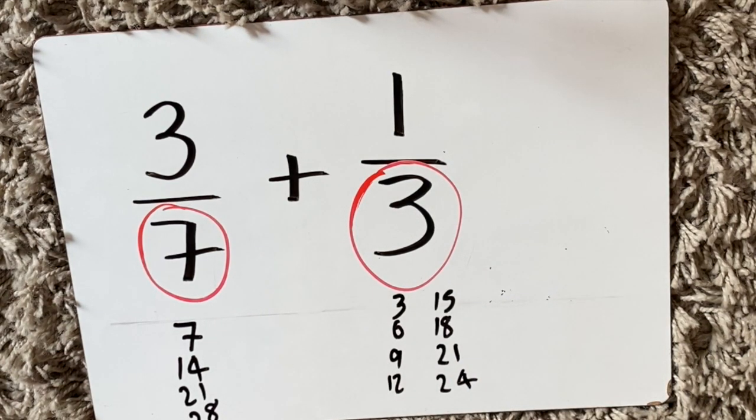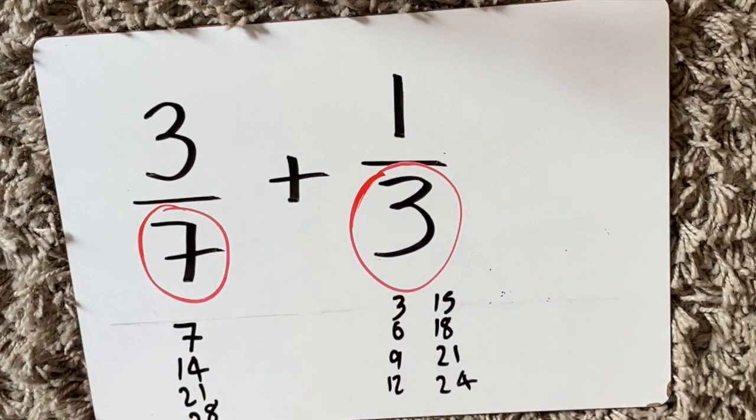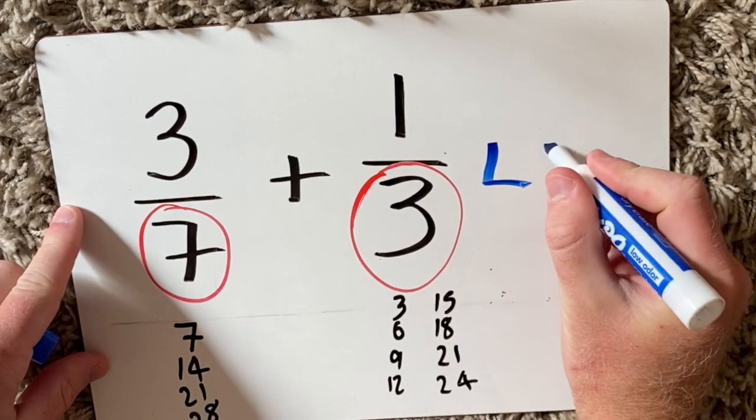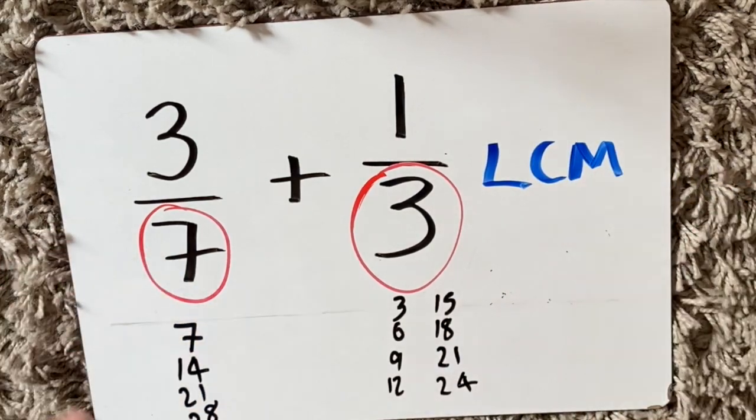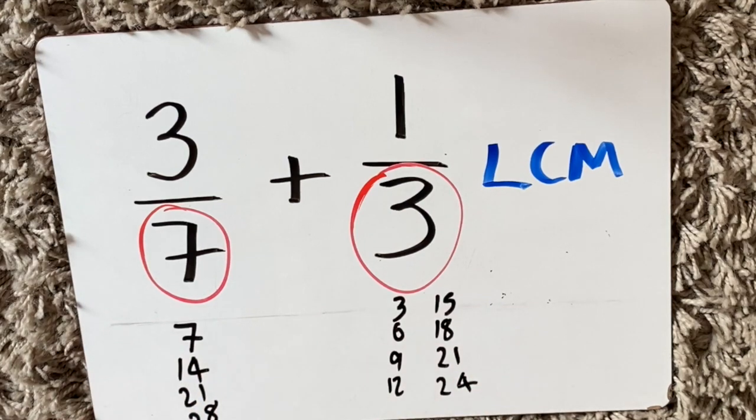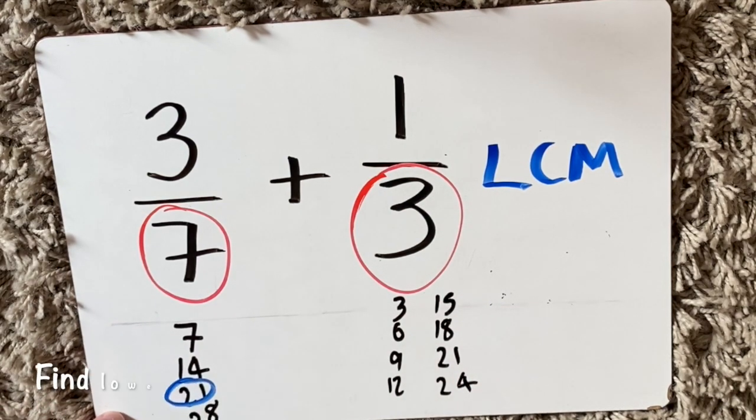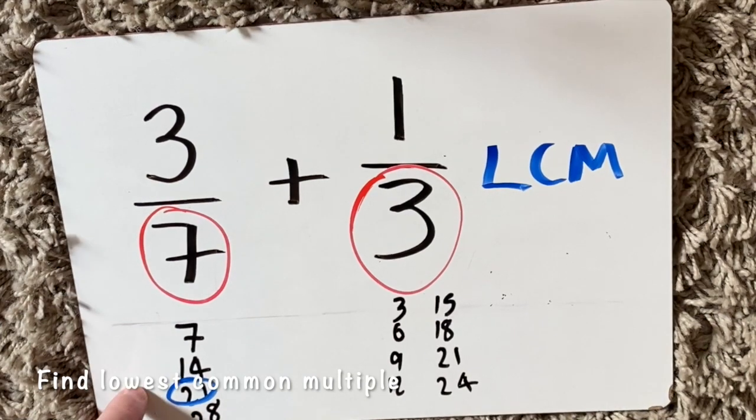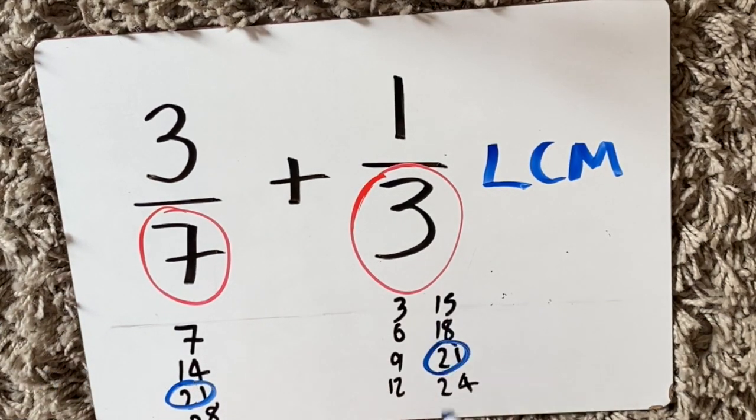Then I'm going to look at both lists and find what we call the lowest common multiple. Basically, that means the lowest number that is in both of these lists. I can see here that twenty-one is in the seven times table and also in the three times table.